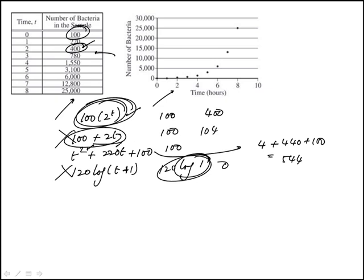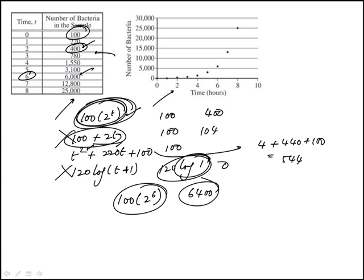To further verify, we can test another data point. At t equal to 6, we get 100 times 2 to the 6, which is 6400 — and that's somewhat close to the corresponding data point. So the answer is 100 times 2 to the power of t, which is answer choice A.